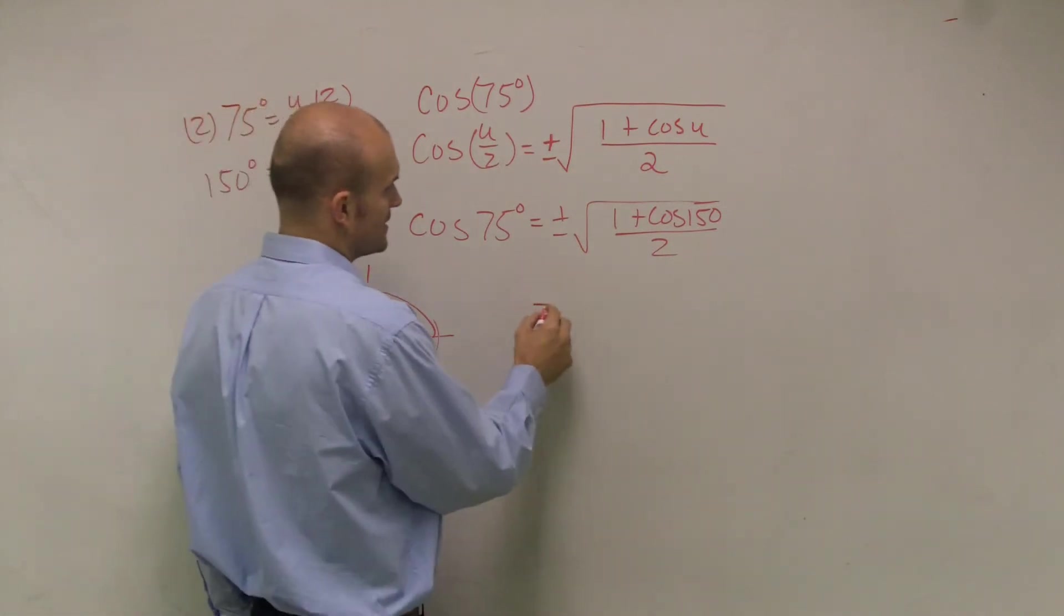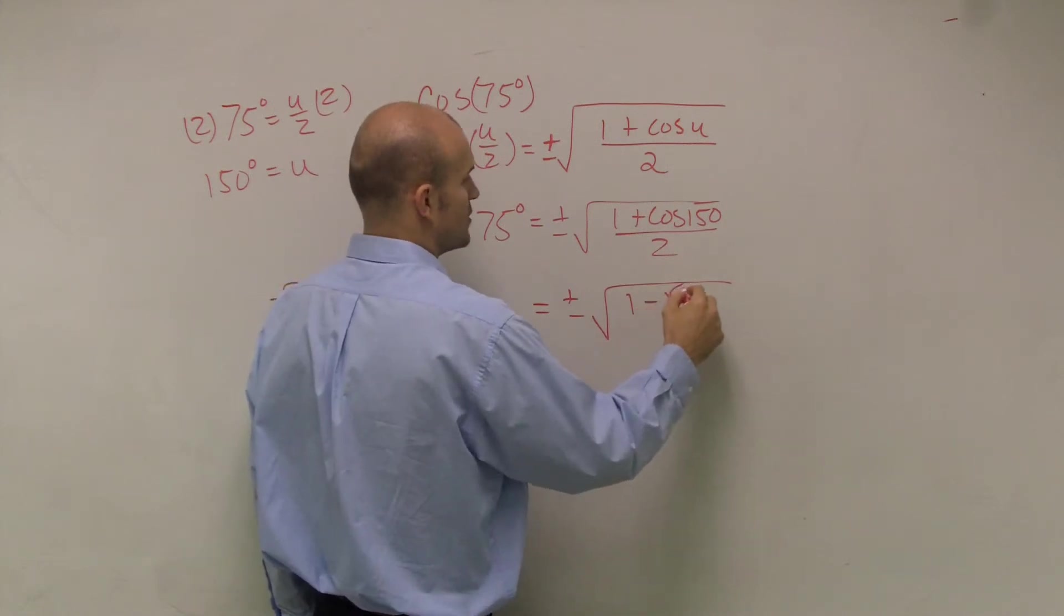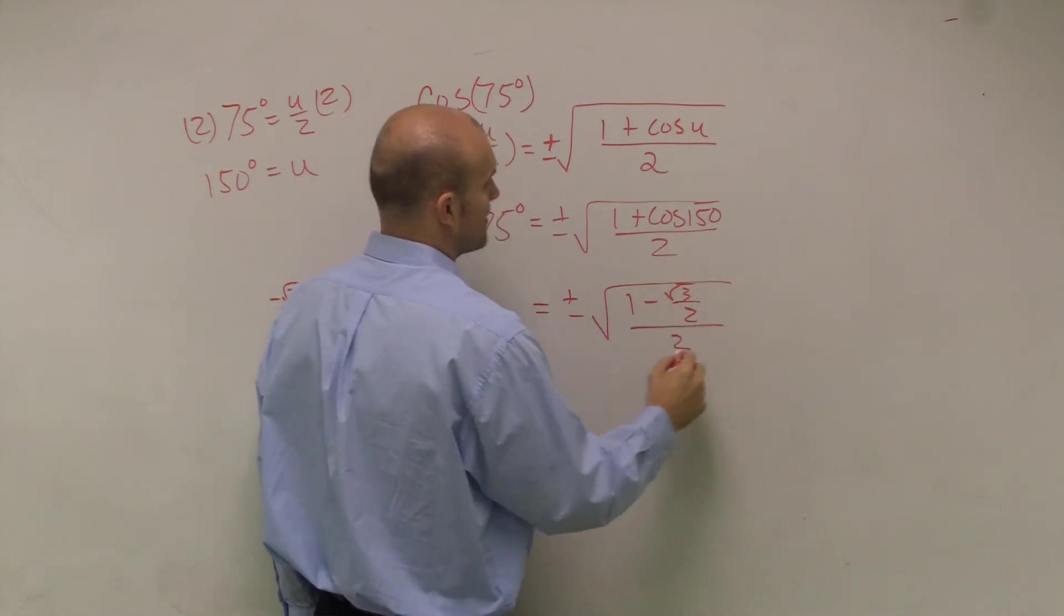So therefore, this equals plus or minus radical 1 minus radical 3 over 2, all divided by 2.